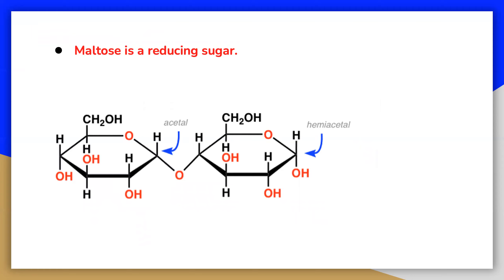Reducing sugar in biochemistry is any sugar that is capable of acting as a reducing agent because it has a free aldehyde group or a free ketone group. All monosaccharides in nature are reducing sugars, along with some disaccharides, some oligosaccharides, and some polysaccharides. Maltose, out of all these, is a reducing sugar. Therefore, its two glucose molecules must be linked in such a way as to leave one anomeric carbon that can open to form an aldehyde group.